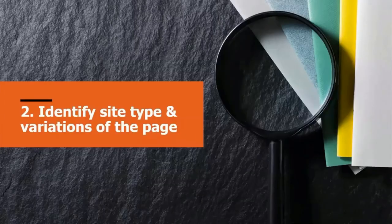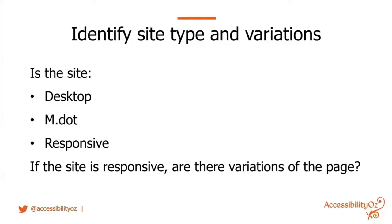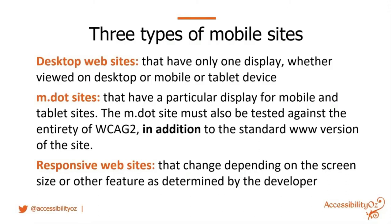Step two is to identify the site type and variations of the page. First determine if the site is a desktop site, a responsive site, or an MDOT site. Desktop sites have only one display whether viewed on desktop, mobile, or tablet. MDOT sites have a particular display for mobile and tablet. The MDOT site must be tested across all of WCAG 2, and the WWW version also needs to be tested against the mobile methodology — don't assume someone won't reach your WWW site on mobile.